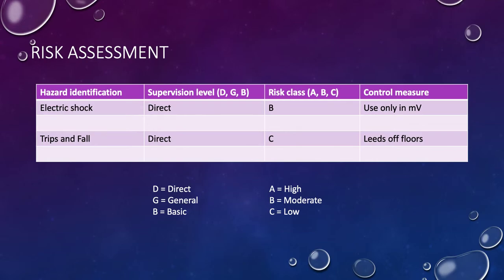Did a quick risk assessment. Electric shock is going to be almost zero because we're only using voltages that'll be induced in millivolts or even microvolts. Trips and falls, of course, always a hazard around my workshop - keep the leads and things well up off the floors, benches clear, etc.